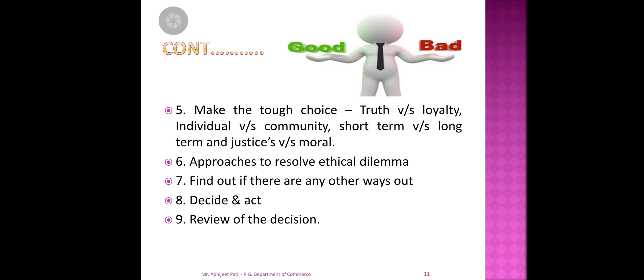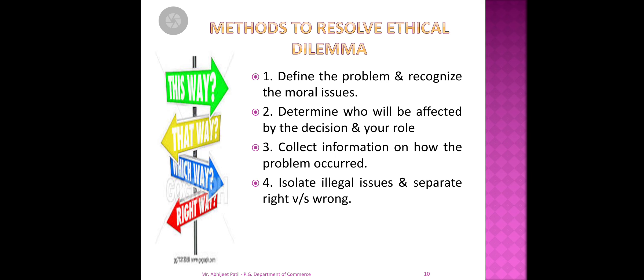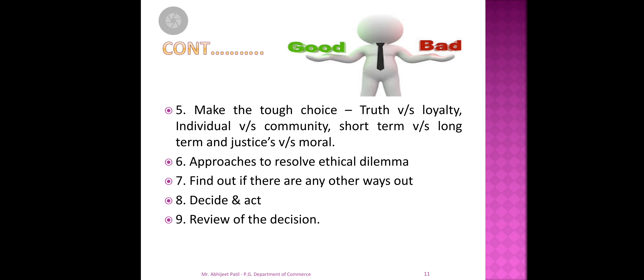Find out if there are any other ways or options available apart from the identified approaches. Finally, step seven: decide and act — determine which right is correct when facing right versus right. Ultimately, review the decisions from problem to approaches to tough decisions. Once you go through all these steps, you can resolve problems of ethical dilemma, always analyzing what the main problem is, who is affected, collecting information, separating illegal issues and right versus wrong, and making decisions on truth versus loyalty, individual versus community, short-term versus long-term, and justice versus moral.